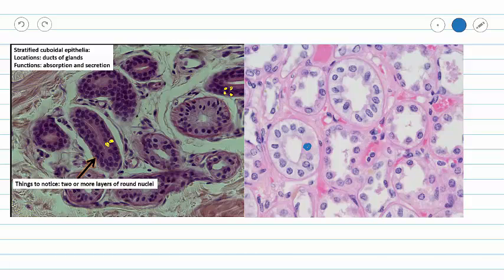And here on the right, we only have one layer of cells in our epithelium. So you can see that they have basically the same shape. We have these nice round structures with a round lumen. In stratified cuboidal epithelium, sometimes our lumen is not round.